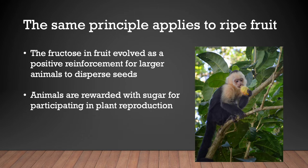The same principle applies to fruits. Fructose in fruit evolved as a positive reinforcement for larger animals to disperse seeds, like monkeys or birds. They either eat the fruit and drop the seeds, or they consume the seeds and drop them somewhere else. So the animals are rewarded with sugar for participating in plant reproduction.